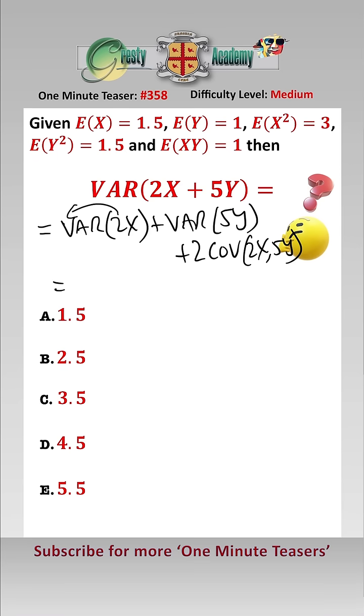And that equals, when we take the 2 out we square it, so that's 4*VAR(X). When we take the 5 out we square it, 25*VAR(Y). And when we take the 2 and the 5 out we don't square them, that's 20 times the covariance of X and Y.